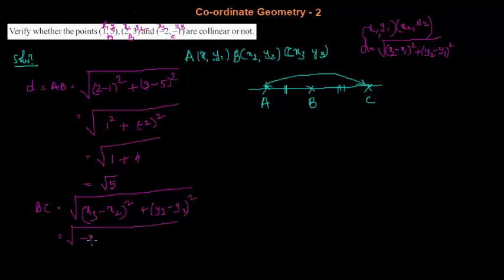(-2-2)² plus (-1-3)². Which is equal to square root of 16 plus 16, which equals √32.